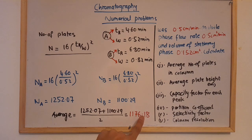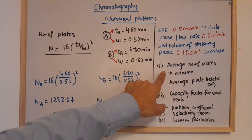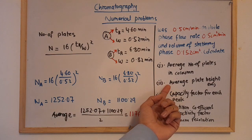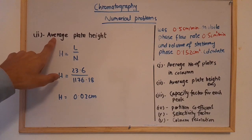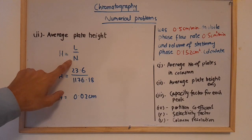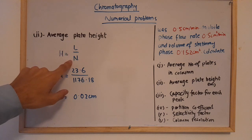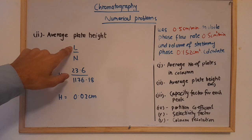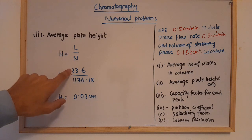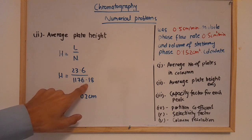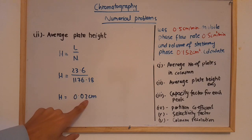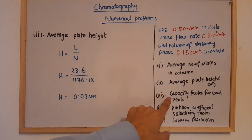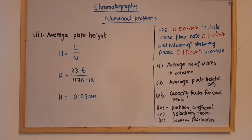The average number of plates is 1176.1, which is the answer to the first question. Next, we find the average plate height in centimeters using the formula H = L/N, where L is the column length. With L = 23.6 cm and N = 1176.18, the average plate height is 23.6 ÷ 1176.18 = 0.02 cm.